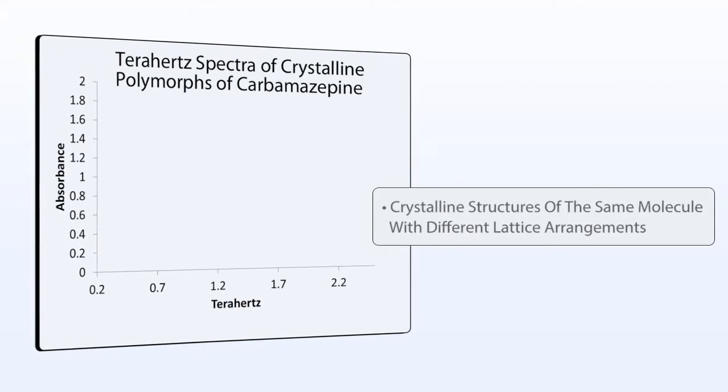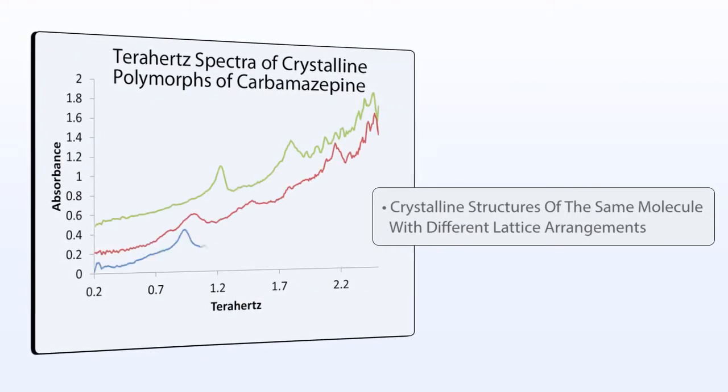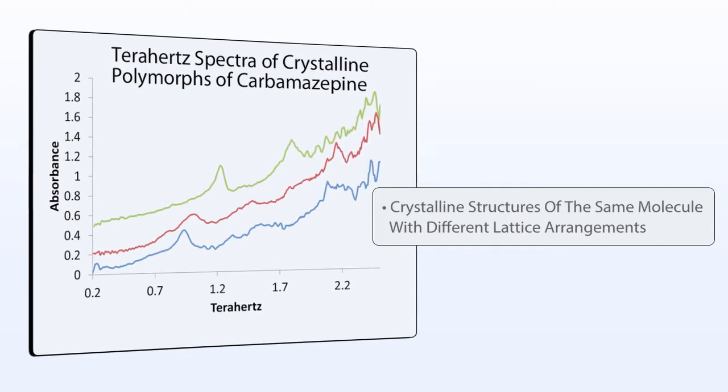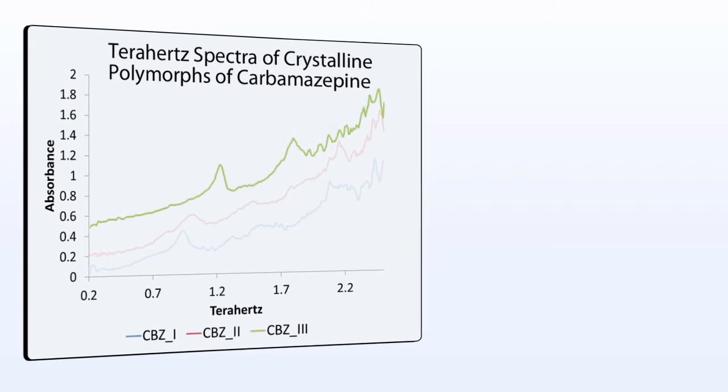Polymorphs are crystalline structures of the same molecule with different lattice arrangements. The terahertz spectra of polymorphs often exhibit unique fingerprints, as shown here for the API carbamazepine.